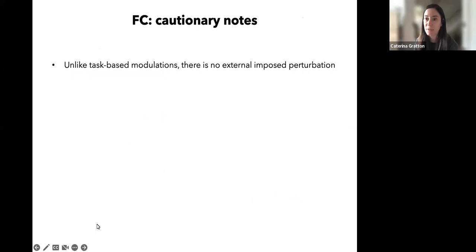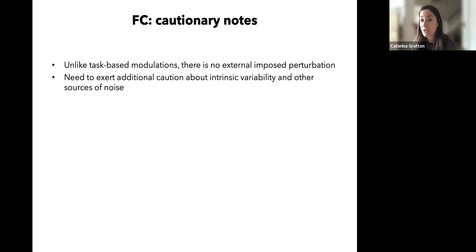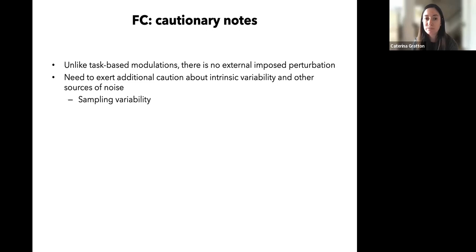This is quite neat — using spontaneous activity patterns and data-driven clustering, we get a detailed representation of brain networks matching what we already knew, like visual and motor systems, while also easily identifying systems harder to find otherwise, such as the default mode, frontal parietal, and cingulate systems. However, we should be cautious. Because these are observational signals without an explicit experiment, there's no external constraint on the resting state signal, meaning we must be cautious about other forms of variability that can influence it.